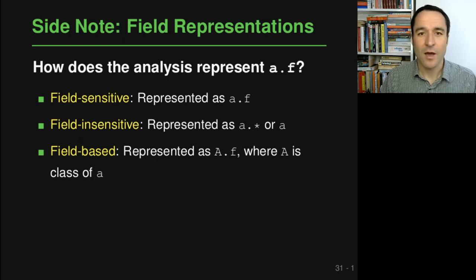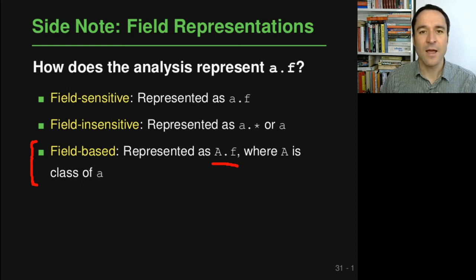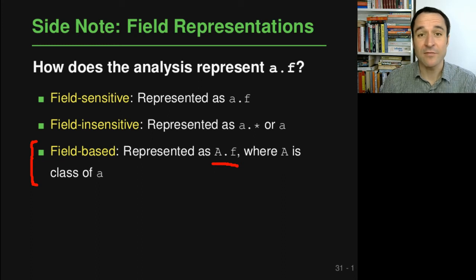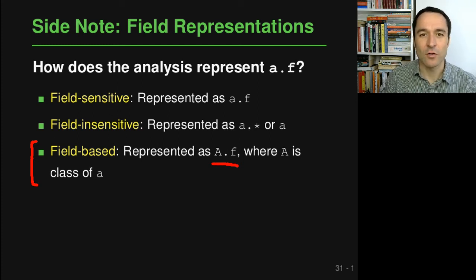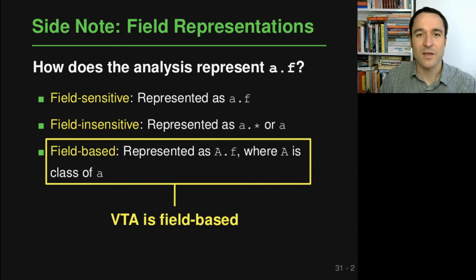A third approach, in between the two, is called field-based. Here the idea is that you don't collapse all fields of a class, but you collapse all instances of a class with respect to a particular field, representing a field as A.f where A is the class of your variable a. So all instances of that class are thought to share the same field f, making the analysis more scalable because it doesn't have to distinguish between fields f of all different instances of class A.